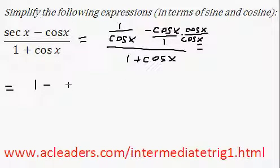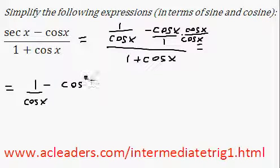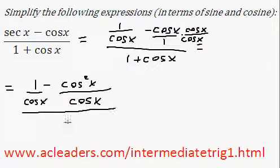So I'm going to get, here I still have 1 over cos x, right there, minus cos squared x, because of cos of x times cos of x, over cos of x, all over 1 plus cos x.